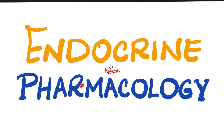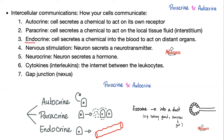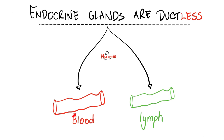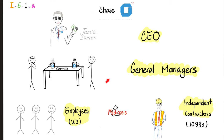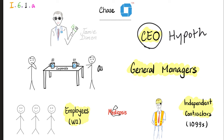Introduction to endocrine pharmacology. What is the endocrine system? Endo means 'into' — into the blood. When a cell secretes something directly into the bloodstream, it's called endocrine. Think of the endocrine system as a company: there is a CEO on top, followed by general managers, and then employees who must obey the managers. There are also independent contractors who do not obey the managers. What is the CEO of the endocrine system? The hypothalamus. What is the general manager? The anterior pituitary.